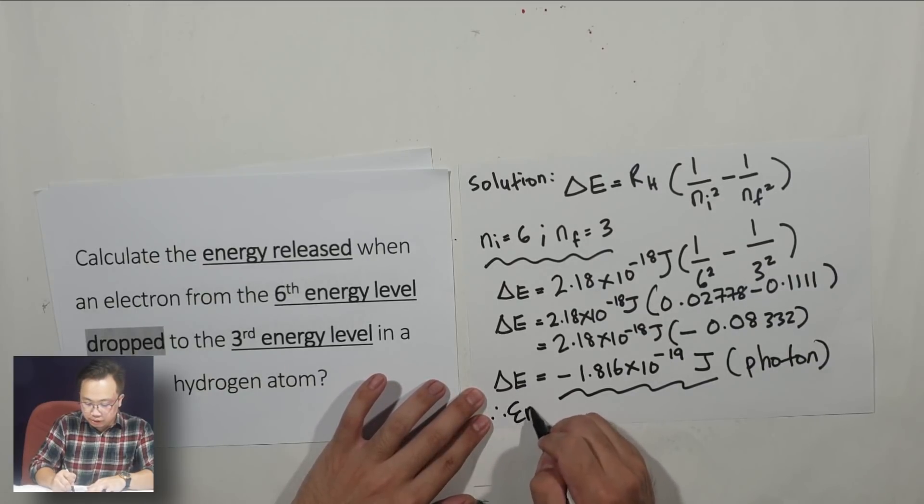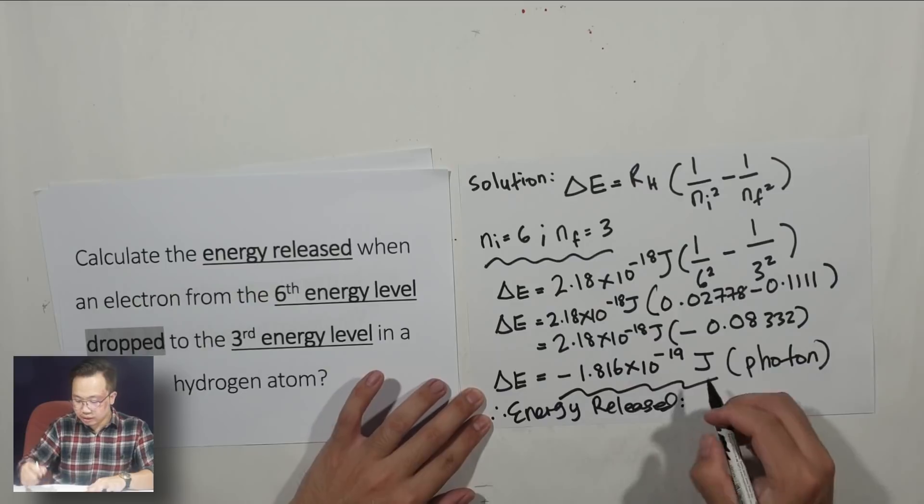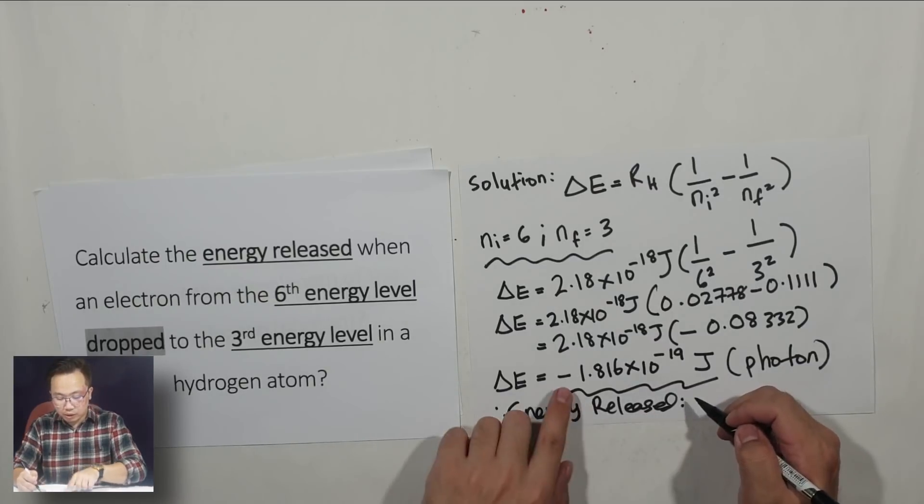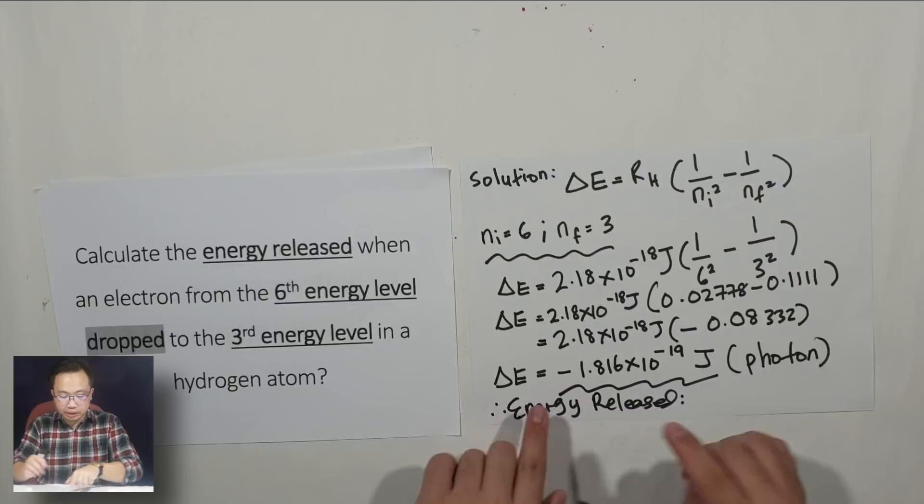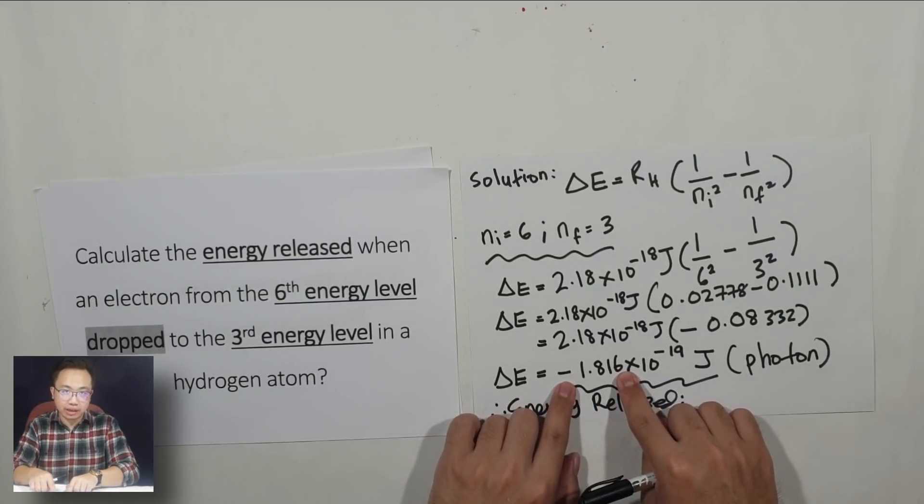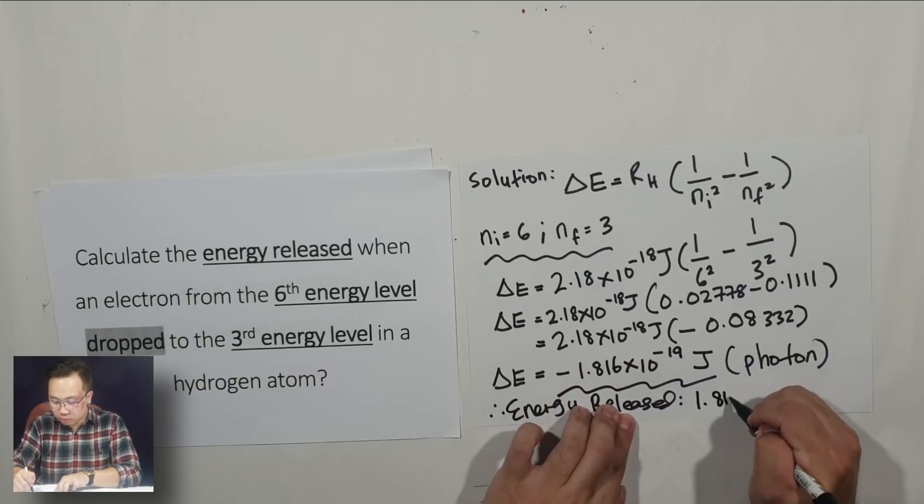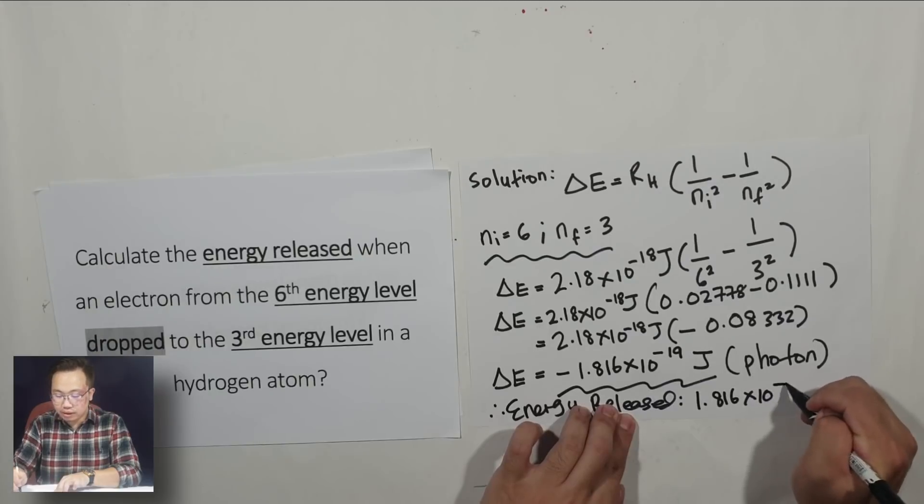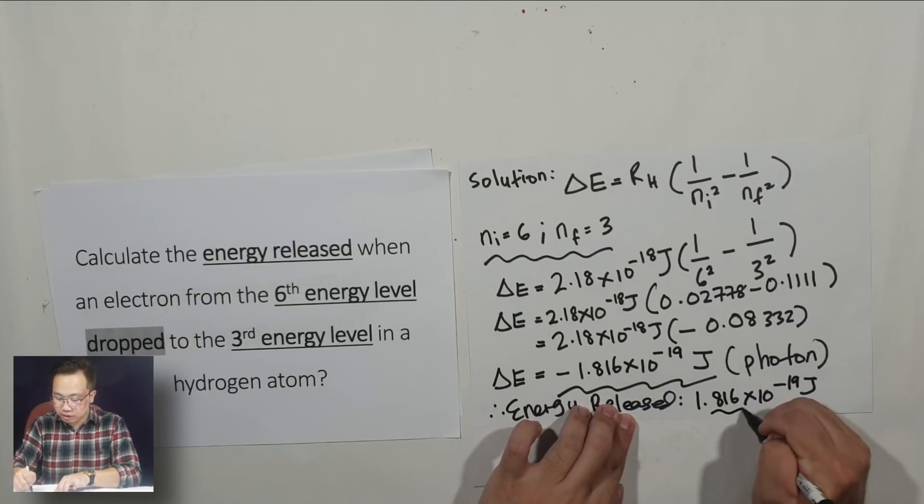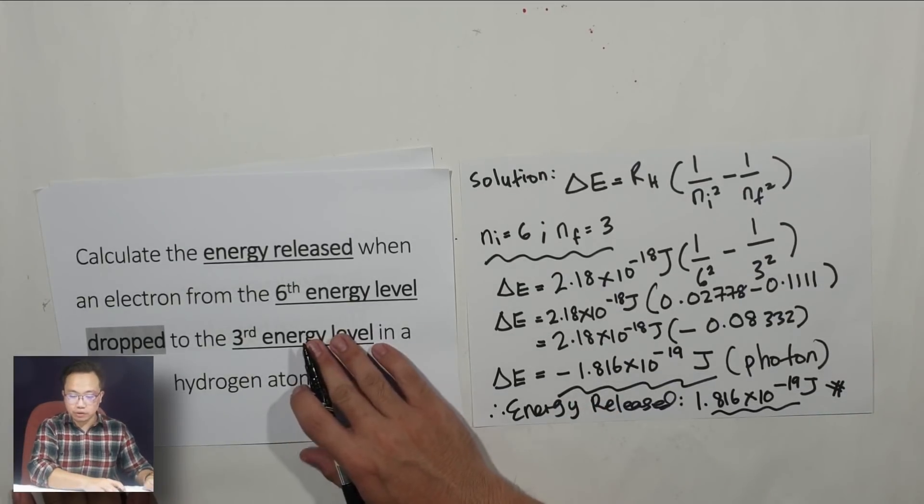You can write down some conclusion. Therefore, energy released. I can omit the negative sign because when it is in this form, the negative sign is to signify that this energy is being released. 1.816 times 10 to the negative 19 Joule. That should be fine. That is the energy of the photon.